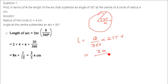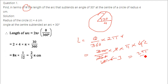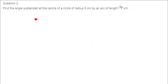Theta is 30 degrees, so we use 30 by 360 into 2 into pi — we keep it as pi because we have to find in terms of pi — and radius is 4. Solving this gives 2 pi by 3, and this is the answer.